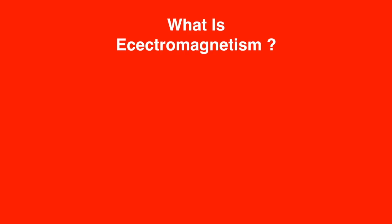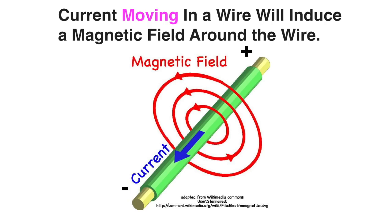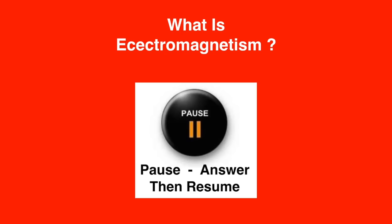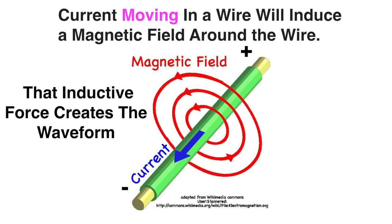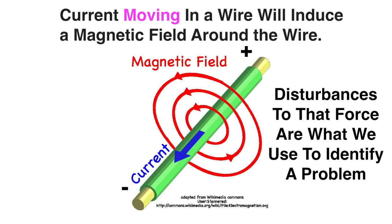What is electromagnetism? It is current moving in a wire, and it will induce a magnetic field around the wire. The inductive force is what creates the waveform. Disturbances to that force are what we use to identify a problem. So — ignition waveform patterns.